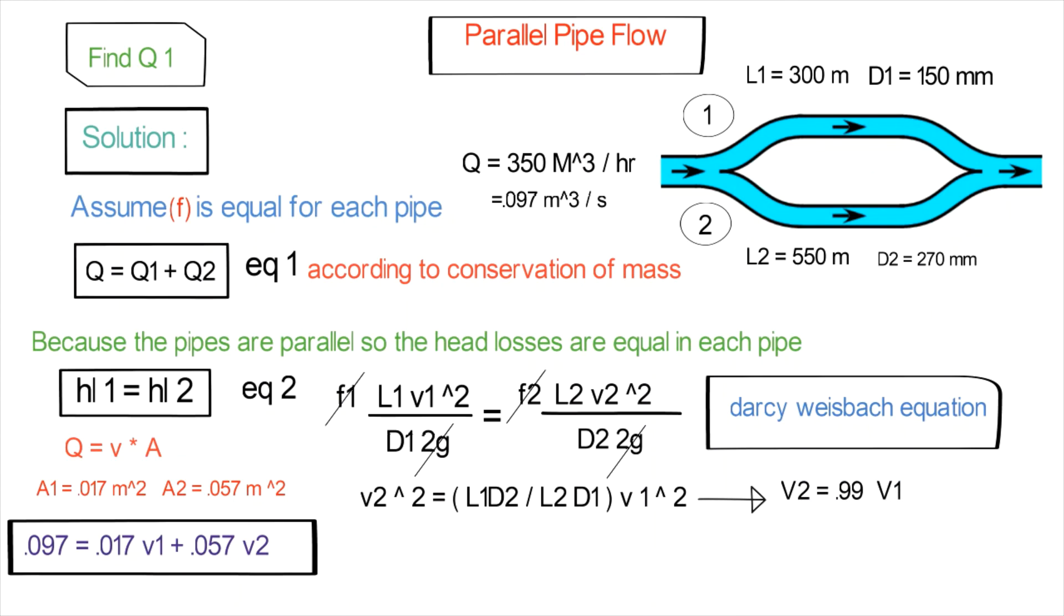So V2 equals 0.99 V1. Substituting in equation one with the value of V2, we get V1 equals 1.32 meters per second. As you know, Q1 equals V1 times the cross-sectional area of pipe one, so Q1 equals 0.02 cubic meters per second.